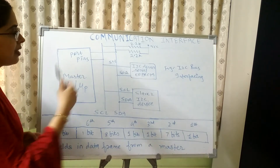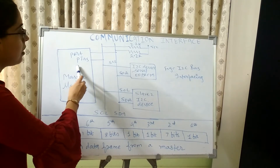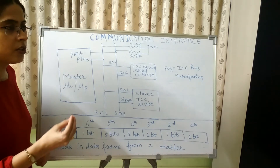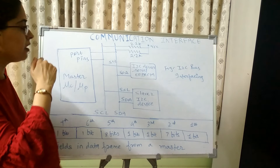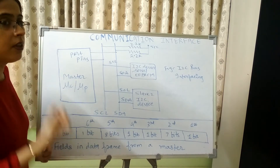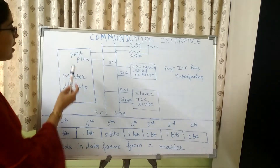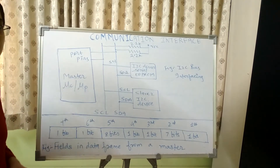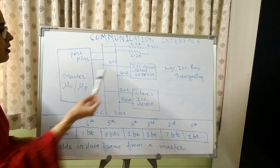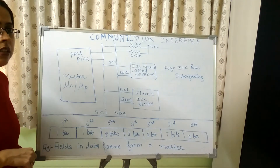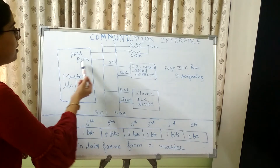The slave device sends the acknowledgement bit to the master device. Before receiving the acknowledgement bit, the master device sends read or write control signals to the slave device. If a write operation is to be performed, it sends 0; if a read operation is to be performed, it sends 1. Upon receiving the acknowledgement bit from the slave device, the master device sends data over the SDA line to the slave device. After receiving the data, the slave device again sends an acknowledgement bit to the master device — this is the write operation.